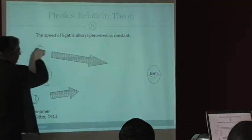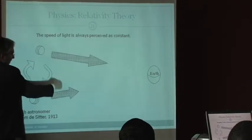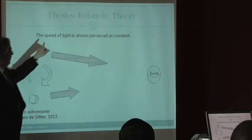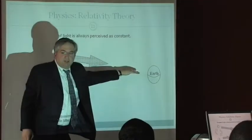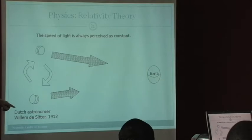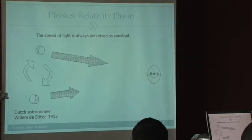Now, this star is going like this, coming towards Earth this way, and this star is going away from it. He said as follows, if it wasn't perceived as constant, then this light should hit Earth faster than this light which is going away from it.